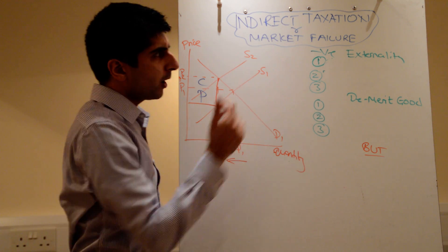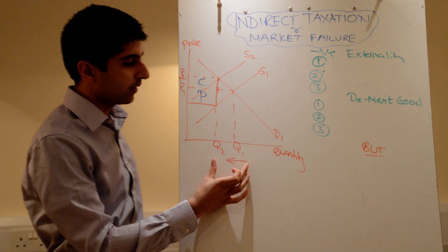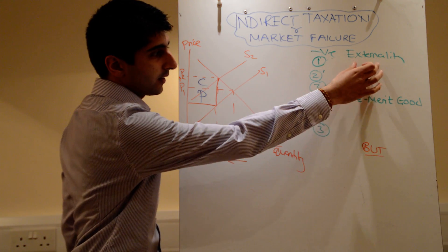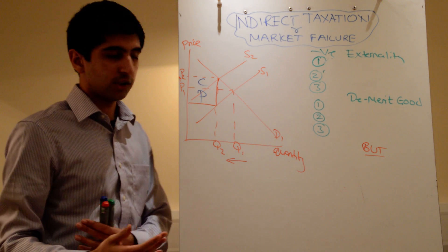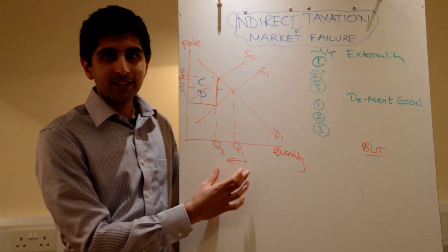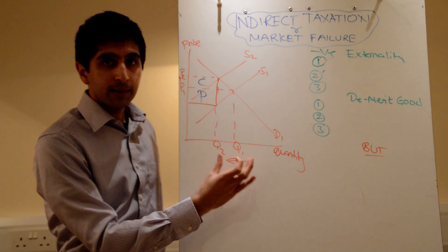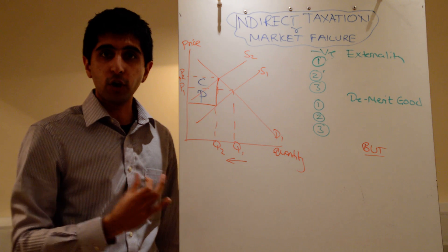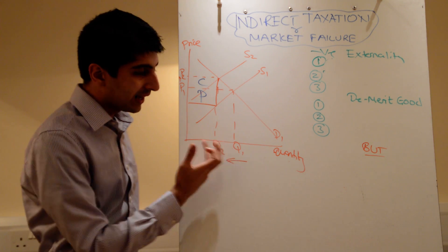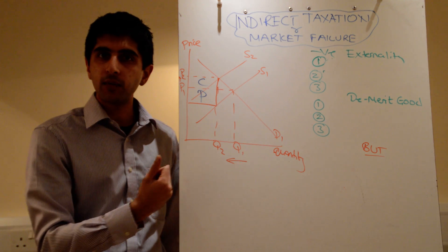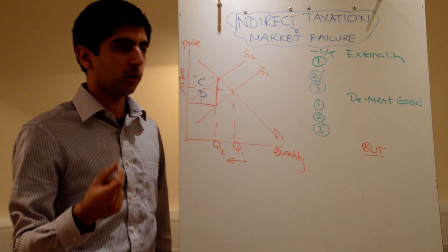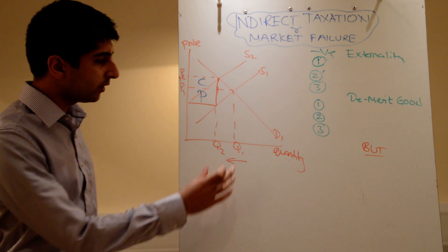Going back to how the market failures solve, taxes work because they reduce quantity levels. For both negative externalities and demerit goods, the problem was of overconsumption and overproduction issues. So by imposing a tax, at least in theory, the quantity in the market moves towards the social optimum level. We're moving left. Remember where Q-star was on our market failure diagrams? We're now moving in that direction, getting closer to the social optimum.